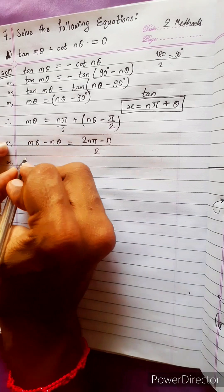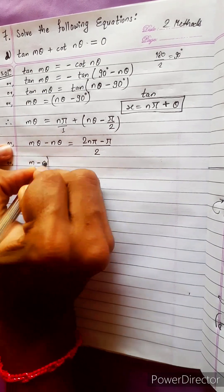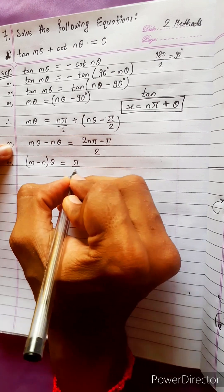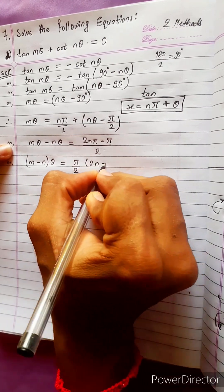Then after we can do here m minus n common, theta is remaining. From here we will get pi by 2 common 2n minus 1.